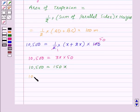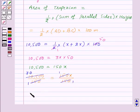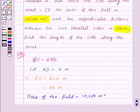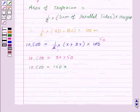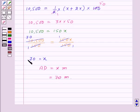Dividing both sides by 150, we get 10,500 divided by 150 equals x. The 150s cancel, giving x equals 70. Therefore AD equals x meters, that is 70 meters.